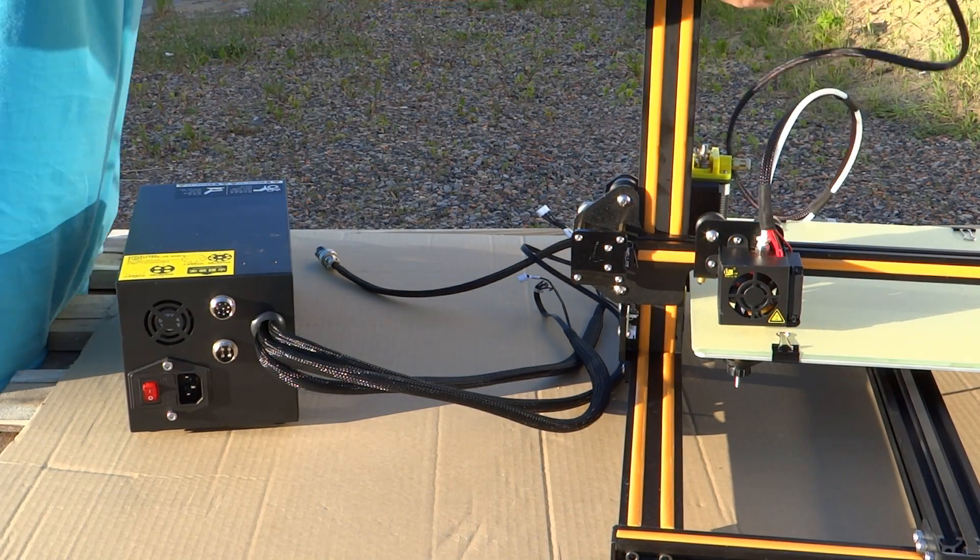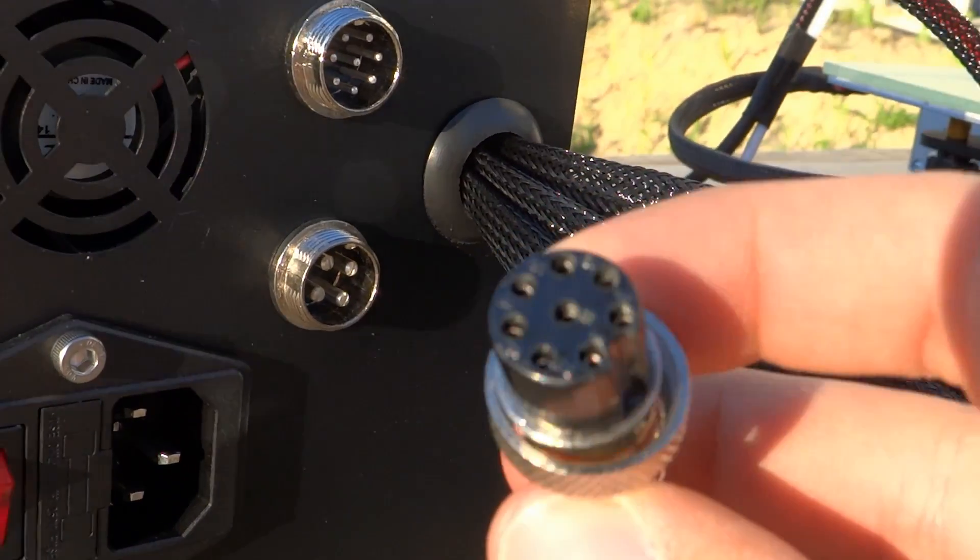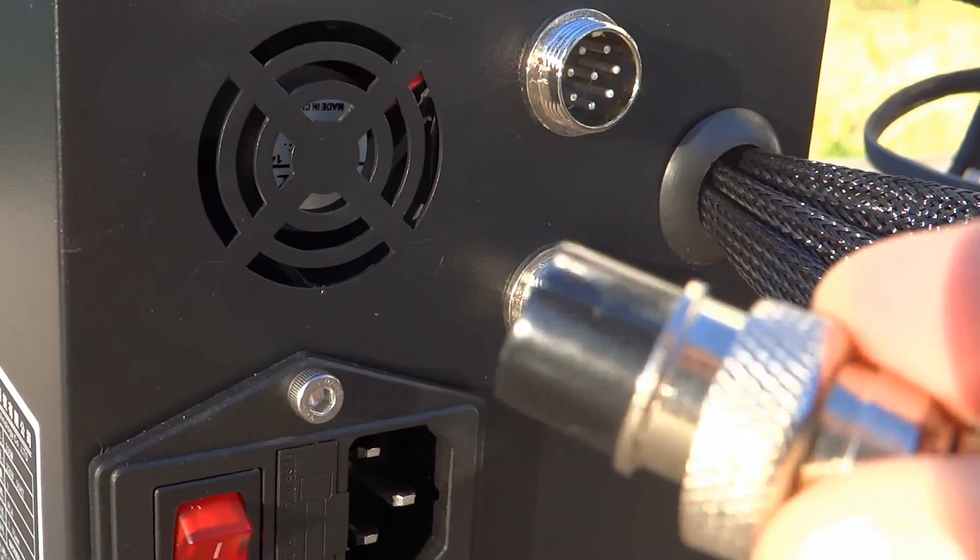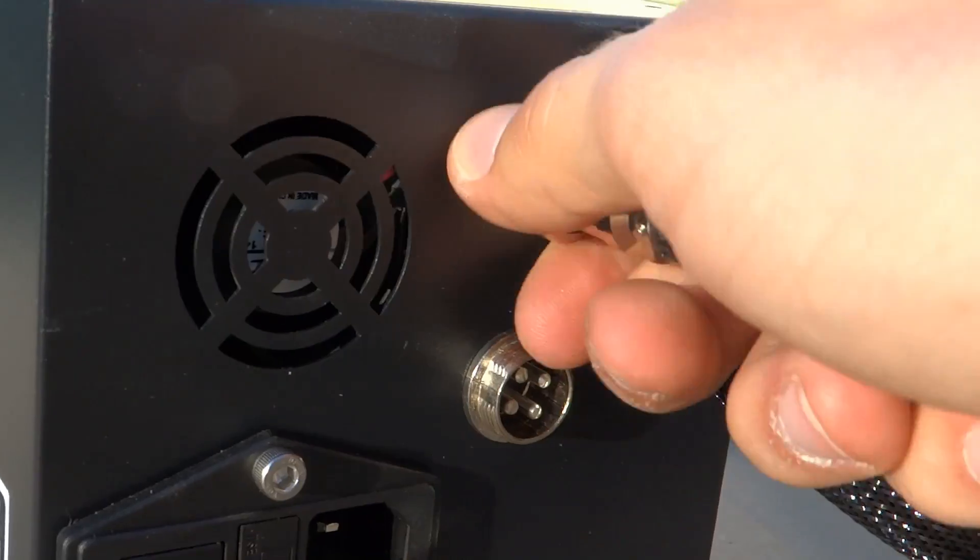Now we can connect cables to control box. The first cable is from head. We have to connect it to upper socket. Second one is from bed and it goes to lower socket.